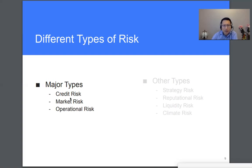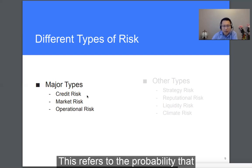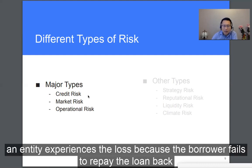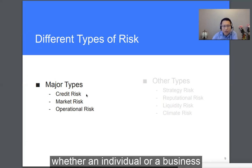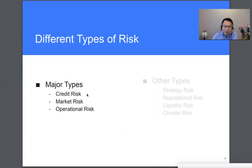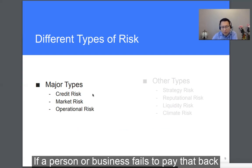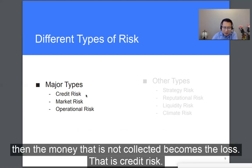Credit risk. What's credit risk? This refers to the probability that an entity experiences a loss because the borrower fails to repay the loan back. So the bank extends a loan to someone, whether it's an individual or a business, expecting that loan to be paid back with the agreed-upon interest and fees. If the person or business fails to pay that back, then the money that's not collected becomes the loss. So that's credit risk.